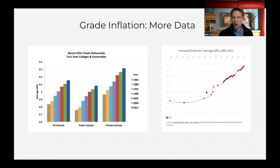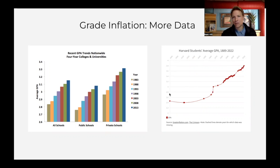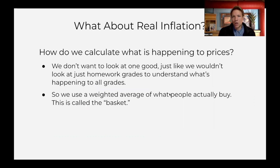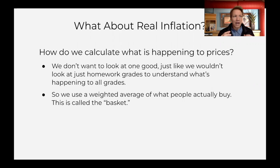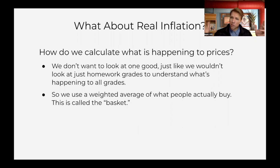Another way of looking at this: this is Harvard — always fun to dunk on Harvard. This is the average GPA at Harvard from 1889 to 2002, and you can see the steady, rampant grade inflation. So what about real inflation? The analogy is: we don't want to look at just one good, just one item and compare that price over time — that would be like just looking at homework grades. We want to use a weighted average of goods and services that people actually buy, weighting higher what people buy more of, to get a composite of how prices are changing over time.